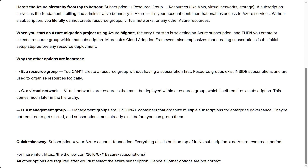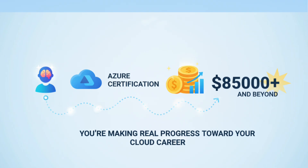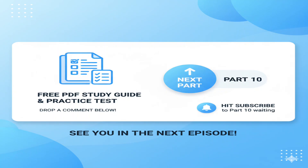Quick takeaway: subscription equals your Azure foundation — everything else is built on top of it. No subscription equals no Azure resources. That wraps up part nine of your AZ-900 journey. You're making real progress toward your Azure certification and that cloud career paying $85,000 and beyond. Get your free PDF study guide and practice test by dropping a comment below, hit subscribe so part 10 is waiting for you, and I'll see you in the next episode.